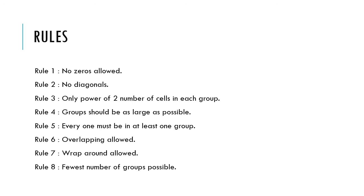To summarize: rule 1 — no zeros allowed in groups; rule 2 — no diagonal groupings; rule 3 — only power-of-2 number of cells in each group; rule 4 — groups must be as large as possible; rule 5 — every one must be in at least one group; rule 6 — overlapping is allowed; rule 7 — wrap-around is allowed across the table; rule 8 — the fewest number of groups possible. In the next class, we will discuss how to use these rules to form groups and perform minimization. Thank you.